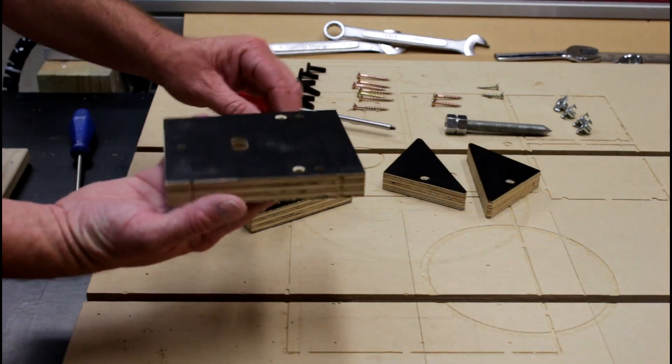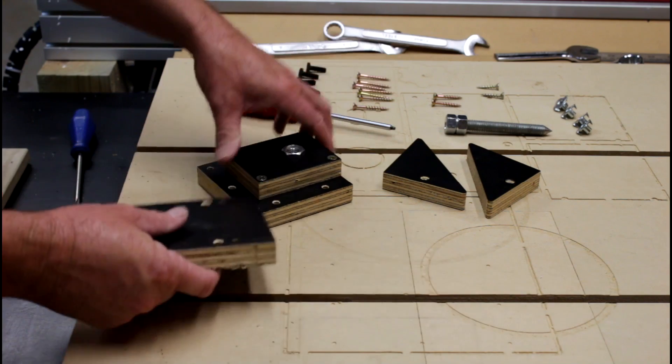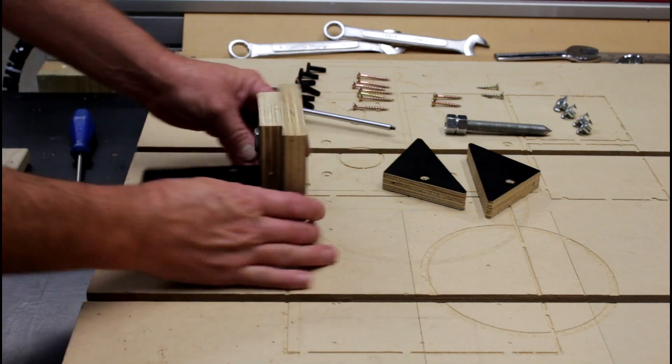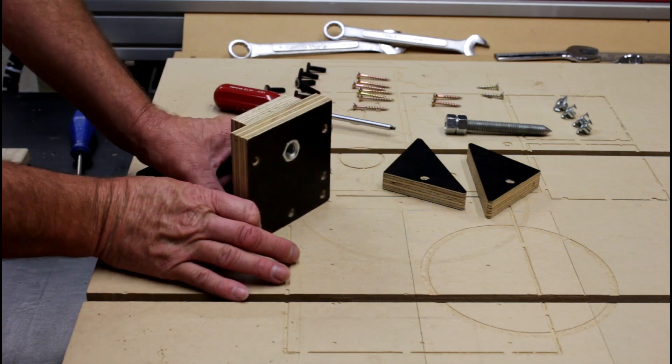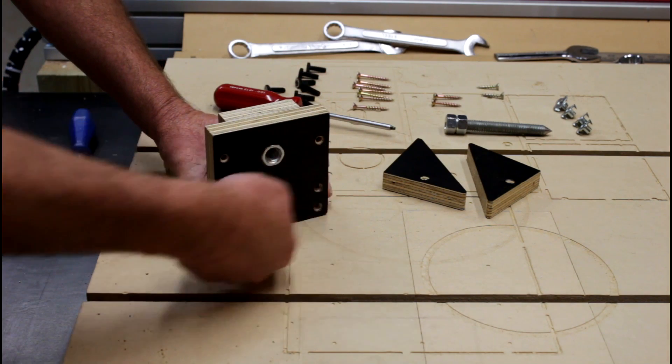Next we're going to put the bottom piece on. And it goes in with the T-nuts facing down. And this here should just hang over the edge and there will be a small gap between there and the base.